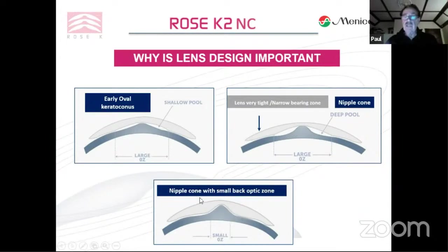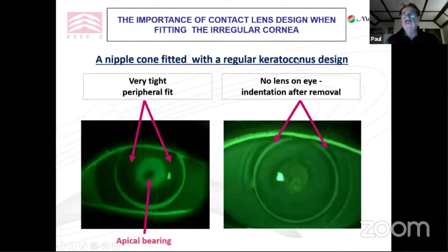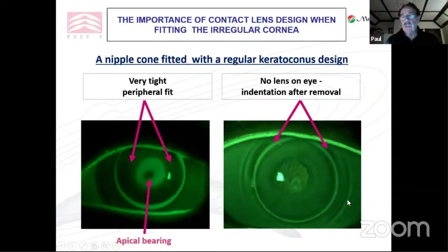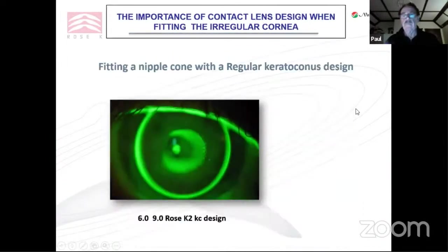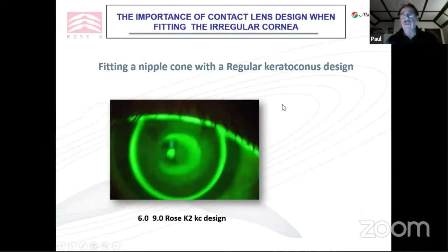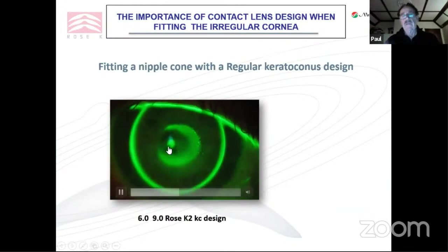With a smaller back optic, you can much more easily align the cornea with the back surface of the lens and get rid of deep pools. You must leave some clearance in the optic zone so the lens moves on the cornea with the blink. Here is a nipple cone fitted with a regular keratoconus design — bearing on the apex, a deep pool around the base of the cone, a wide dark area with no tear exchange, and a tight peripheral system. When you remove the lens, you can see it has been binding to the cornea, already producing central edema right over the pupil — exactly what you don't want.